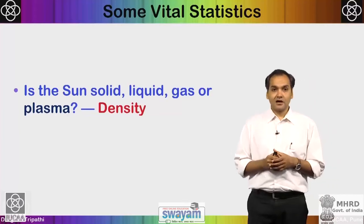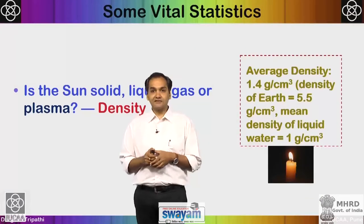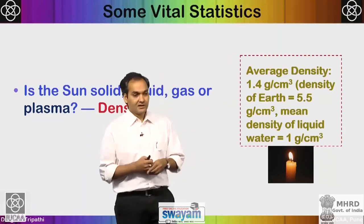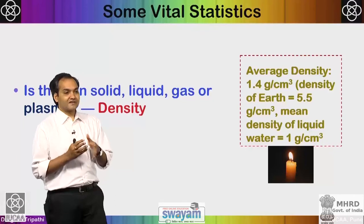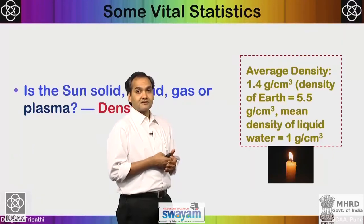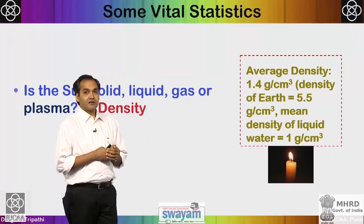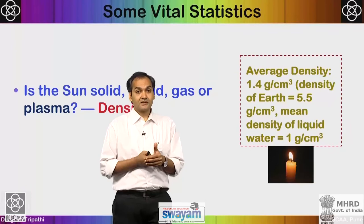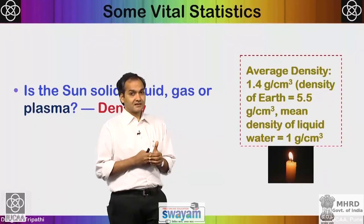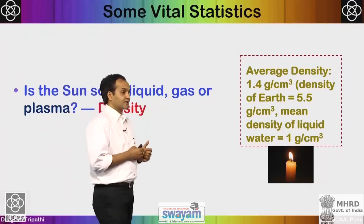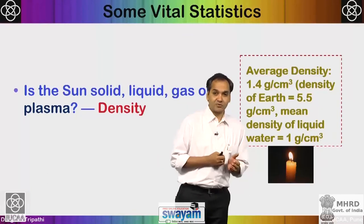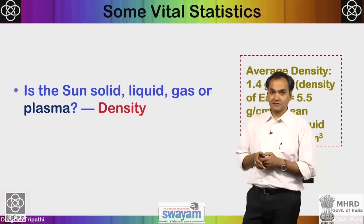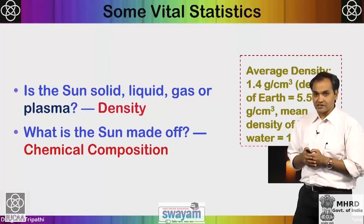The average density of the sun is 1.4 grams per cubic centimeter — denser than water at 1 gram per cc but less dense than Earth at 5.5 grams per cc. The sun is made of plasma. The best everyday examples of plasma are lightning during a thunderstorm, or the flame of a candle when lit.